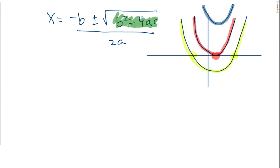If this equals zero, then my x-intercept is minus b over 2a. And if this is a positive number, then I get two x-intercepts.